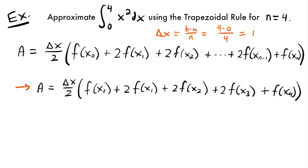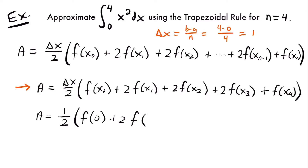So the area equals 1 divided by 2, since delta x is 1, multiplied by f of x sub 0. x sub 0 is the lower bound, and each subsequent x value is found by adding delta x to the previous one. So x sub 0 is 0, our lower bound, and then we add 2 times f of x sub 1, where x sub 1 is 0 plus delta x, which is 1.